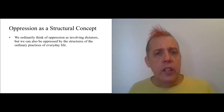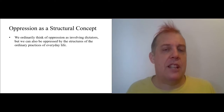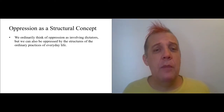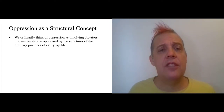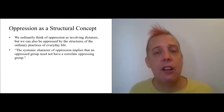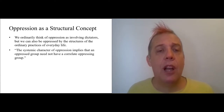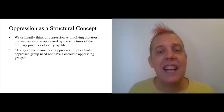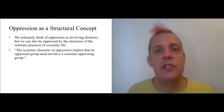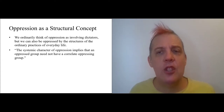In the real world, dictators exist and dictators oppress, but ordinary practices of everyday life can also be oppressive. The systematic character of oppression implies that the oppressed group need not have a correlate oppressing group — you don't need straightforward villains; you could just have a society that is ordered wrong.